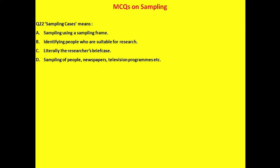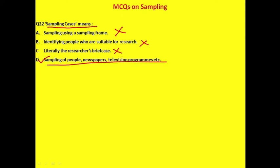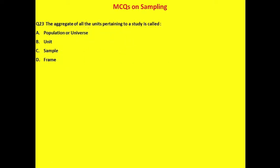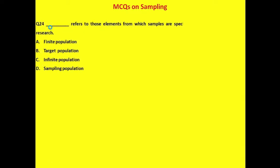Question 22: Sampling cases means — using a sampling frame, identifying people suitable for research, literally the researcher's briefcase, or sampling of people/newspapers/television programs? The correct answer is option D: sampling of people, newspapers, television programs, etc. Question 23: The aggregate of all units pertaining to a study is called population or universe. The correct answer is option A.